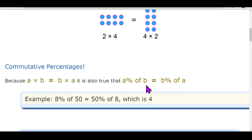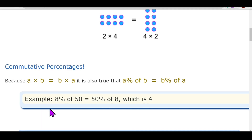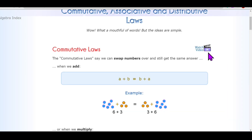For example, if you calculate eight percent of fifty, it will be equivalent to fifty percent of eight — the answer is four in both cases.